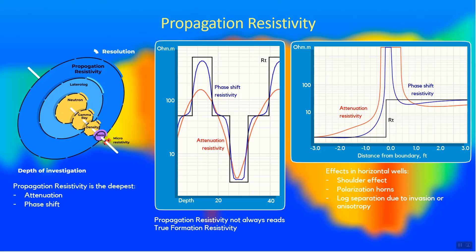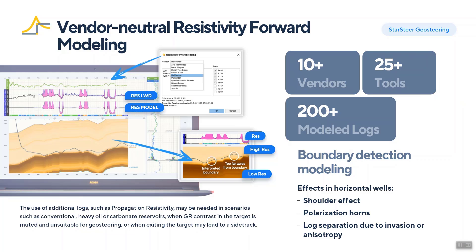Though it's quite deep, the resolution of propagation resistivity is quite low, and almost none of the logs that can be obtained from resistivity tools lead to true formation resistivity. Resistivity interpretation technique is different from gamma — it cannot be directly compared with the type well due to several physical effects.